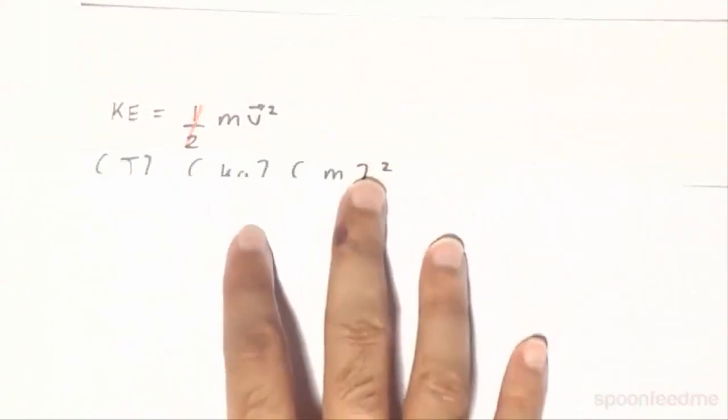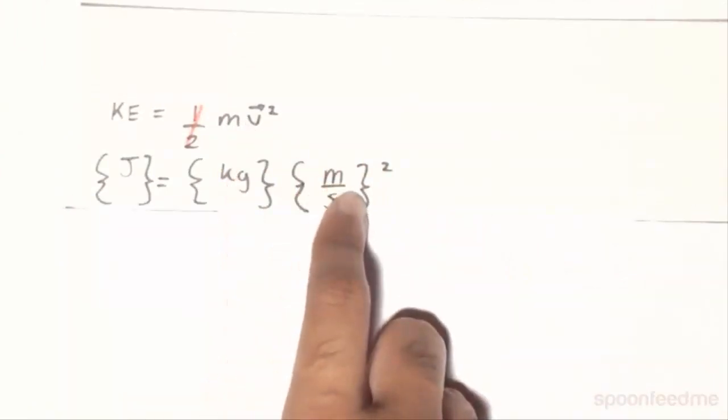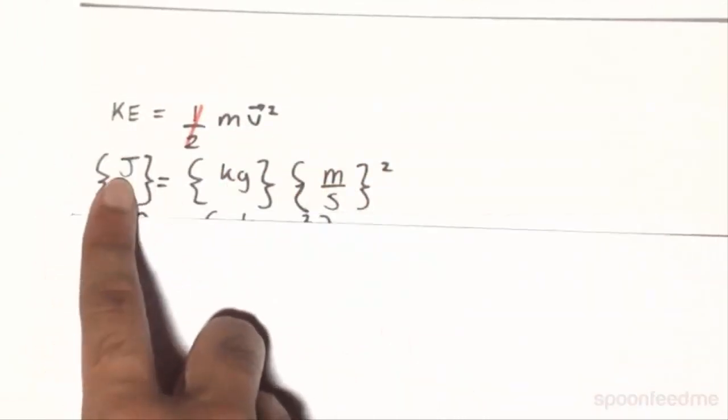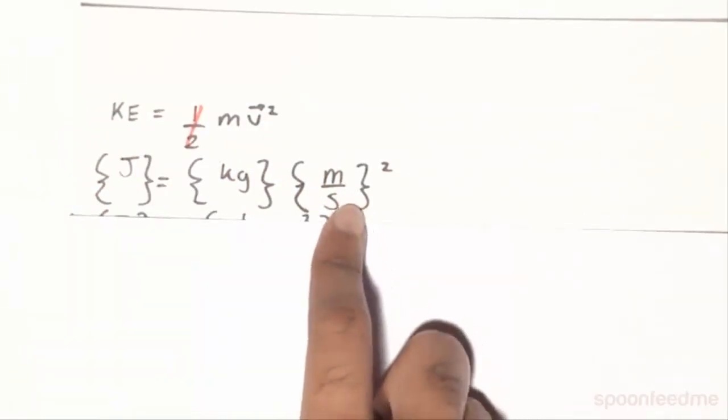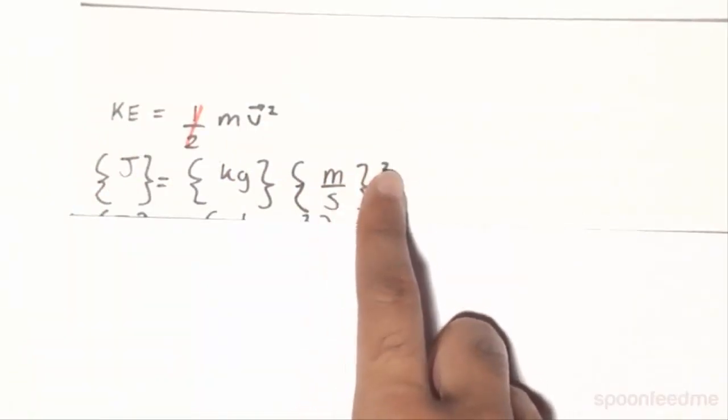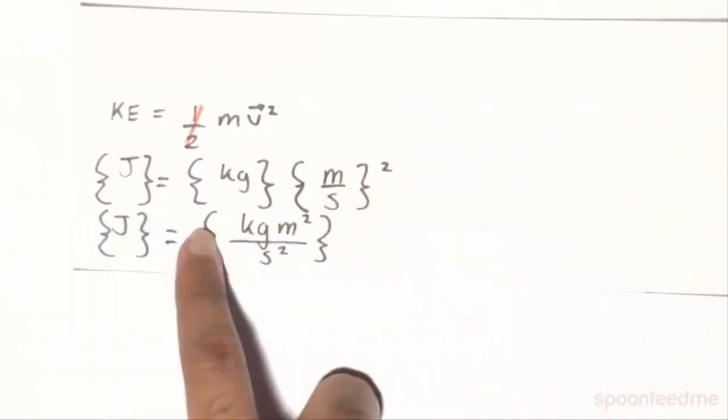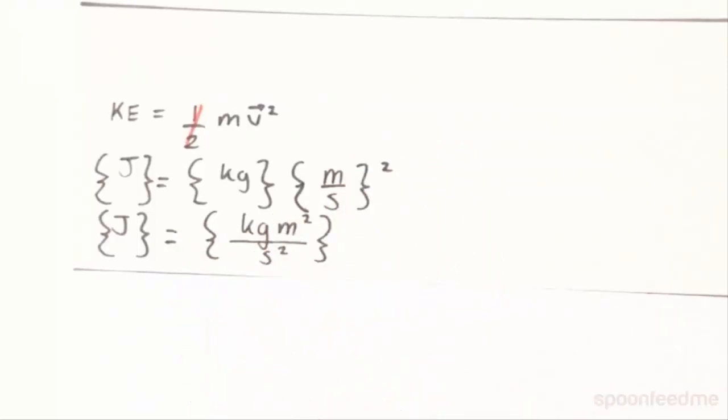The mass is in kilograms, and the velocity is in meters per second, and the kinetic energy is measured in joules. And the velocity is going to be squared. So essentially, a joule is equal to a kilogram meter squared per second squared.